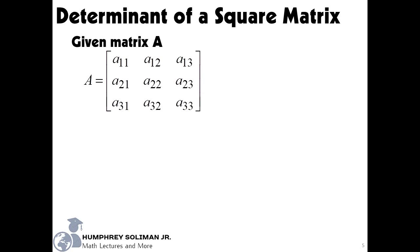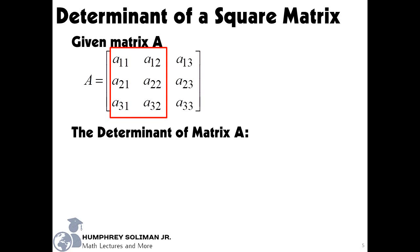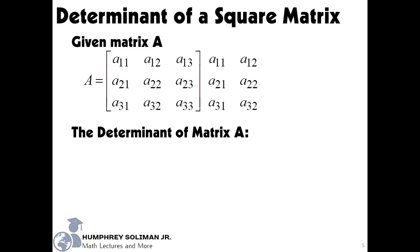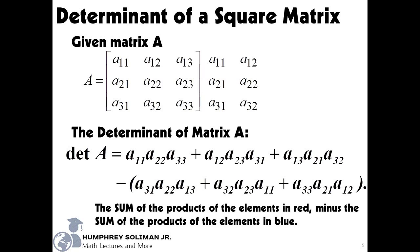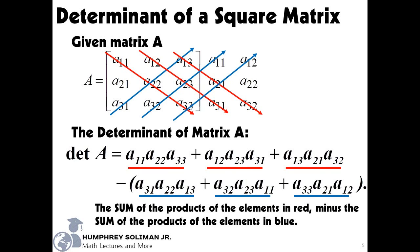Now, finding the determinant of a 3 by 3 matrix, we have the given matrix A below. Our first step is to copy the first two columns of matrix A and put it beside it. Next, we need to get the sum of the products of the elements passed by the red arrow going down, minus the sum of the products of the elements passed by the blue arrow going up.